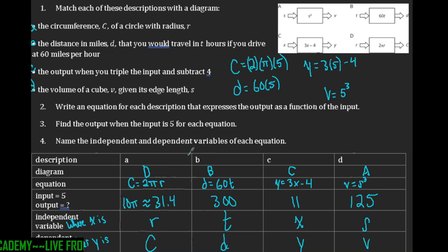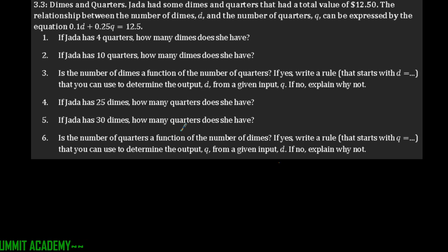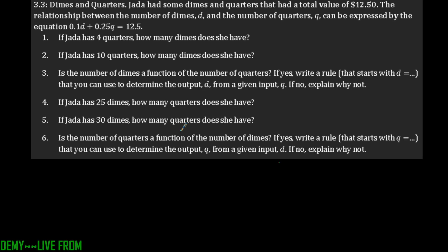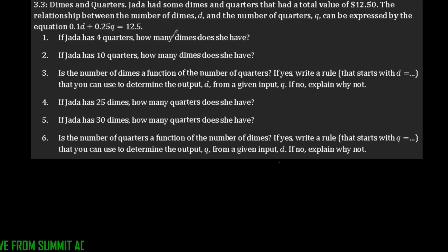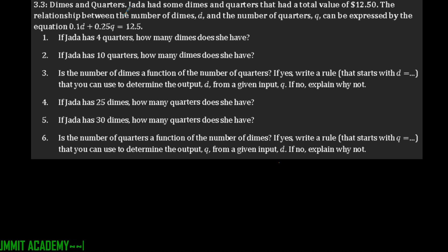For the next part, it's talking about dimes and quarters. Jada has some dimes and quarters with a total value of $12.50. The relationship between the number of dimes d and the number of quarters q can be expressed as 0.1d plus 0.25q equals 12.5. That makes sense because each dime is 10 cents and each quarter is 25 cents, adding together to get $12.50.